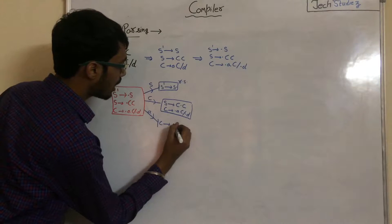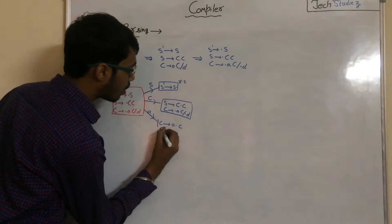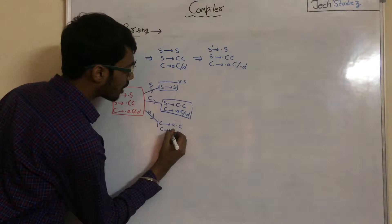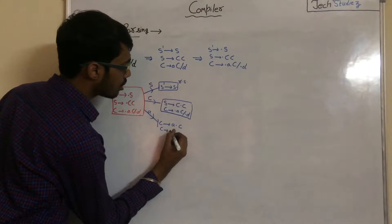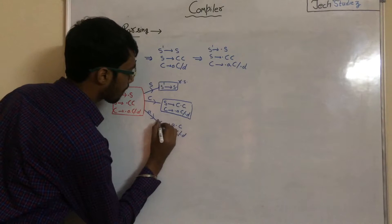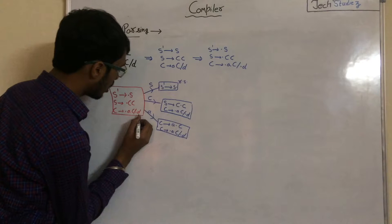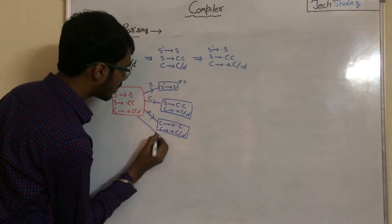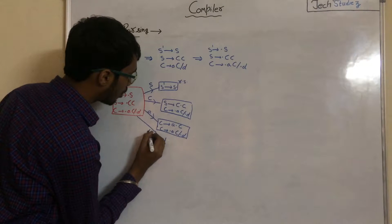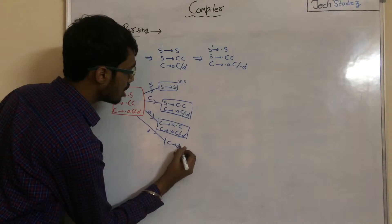Now perform the GOTO operation with A — what we get is C to A·C. We add all productions from C because after the dot we get a non-terminal: C to ·AC and C to ·D. Then apply GOTO move with D — what we get is C to D·.